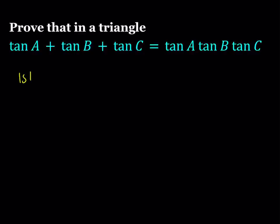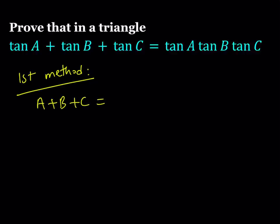So, the first method. I'm going to be using the degree symbol instead of radians; I'll only write it once just to let you know. A plus B plus C is equal to 180 degrees. I'm not going to use the degree symbol from now on, but that's what I mean. If you isolate A plus B, you can write it as 180 minus C.